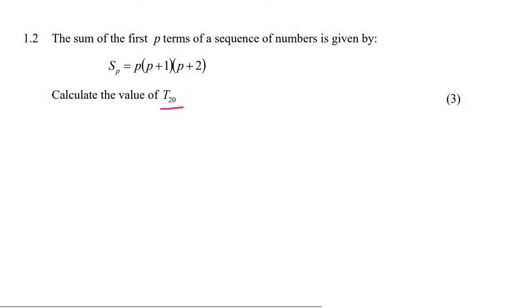So if we want to find term 20, we can say that term 20 is equal to the sum of the first 20 minus the sum of the first 19.